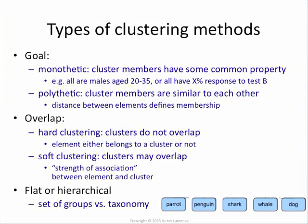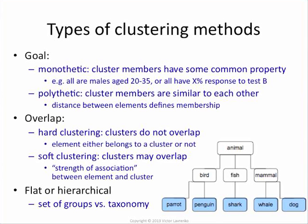You also have either flat clusterings or hierarchical clusterings. In a flat clustering, you've got a bunch of animals and an animal either goes into parrots or penguins or sharks, and so on — it's a flat grouping of elements into groups. In a hierarchical clustering, you can merge subgroups into bigger groups and further subdivide the groups, constructing a hierarchy or taxonomy over your data set. Maybe parrots and penguins all go into one cluster of birds, and then for sharks, you subdivide them into the ones that eat you and the ones that don't.